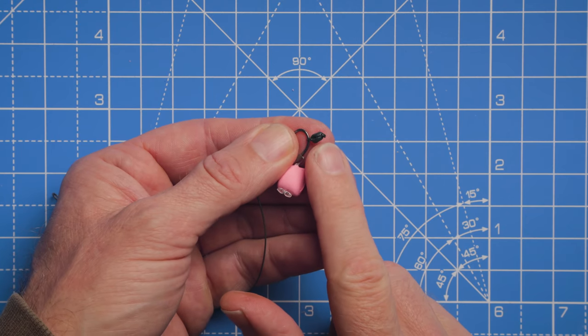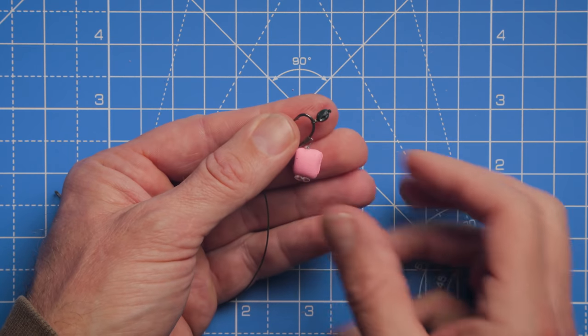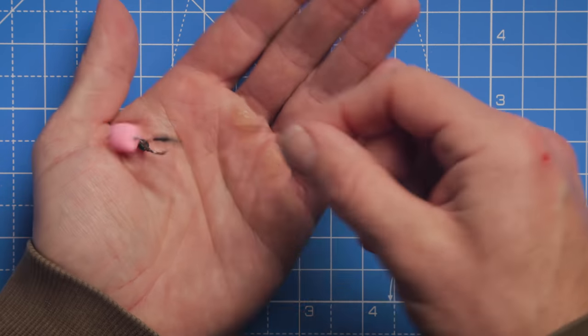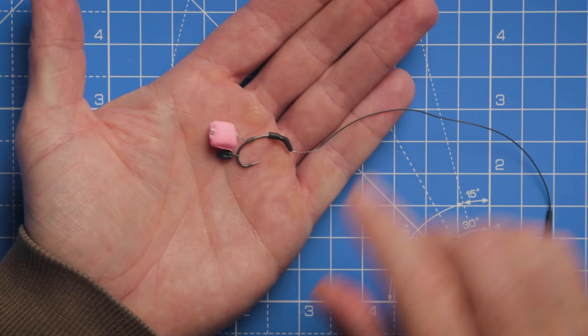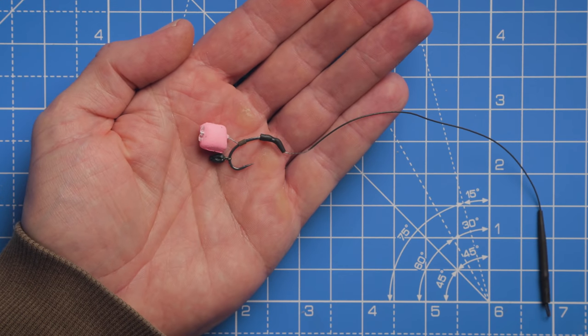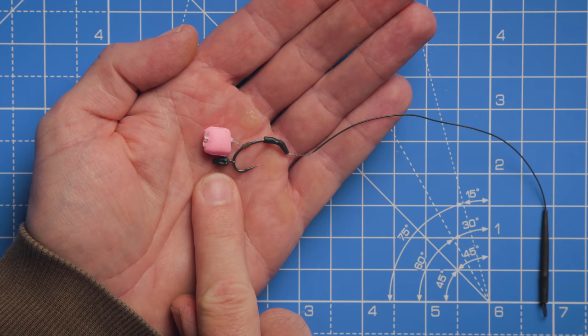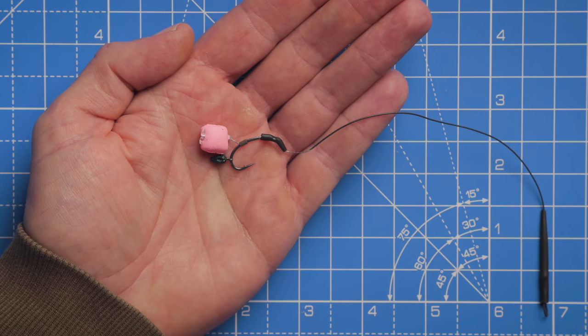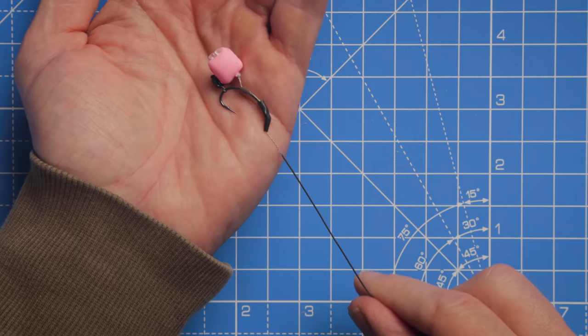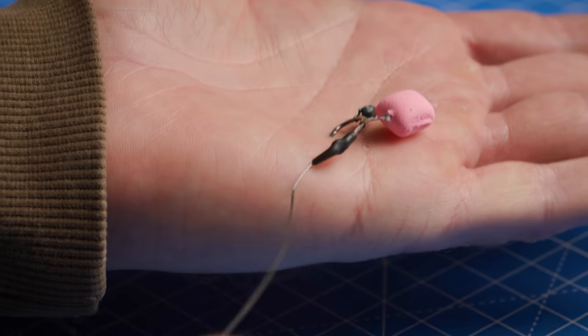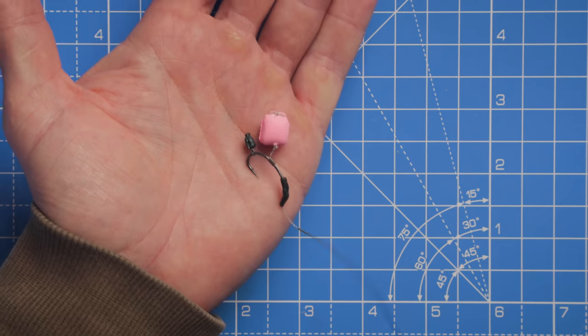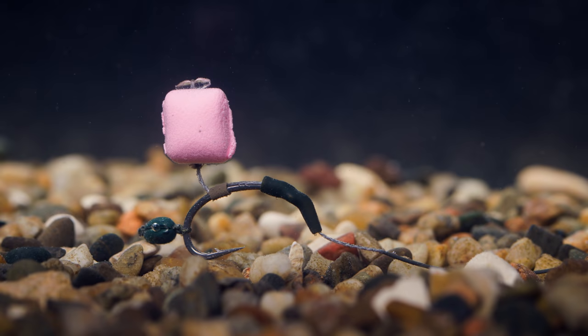There you go - that's the split shot into position on the bend of the hook. When you hook a fish it will slide around the hook so it won't get in the way at all, and that offers enough counterbalance for the buoyancy of that pop-up. We've also got that kicker into position that's going to help the hook turn. As you can see, as I slide that across my hand it turns and pricks into my hand straight away.